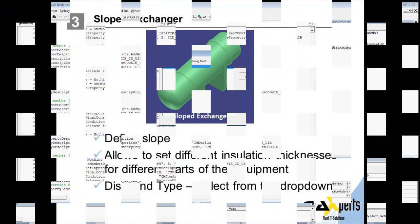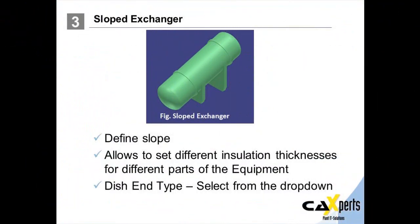We can now see how the symbol generated using the 3D Symbol Designer is used within SmartPlant 3D. This particular symbol allows the slope of the exchanger to be defined. The user can also set different insulation thicknesses to different parts of the exchanger, and the end types can also be selected from a drop-down.